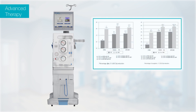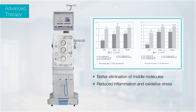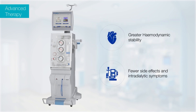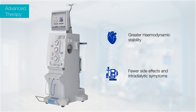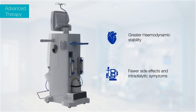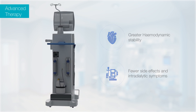A better clearance of uremic toxins can be achieved through a better elimination of middle molecules, leading to reduced inflammation and oxidative stress. It also helps in better phosphorus clearance and better anemia management. Due to greater hemodynamic stability, fewer side effects and lesser intradialytic symptoms, online hemodiafiltration stands as one of the best treatment modalities for your patients.